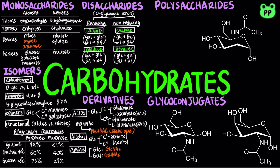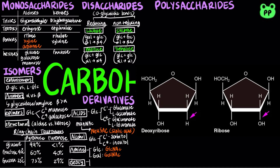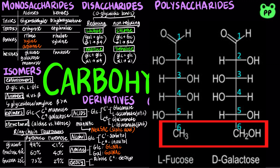In deoxysugars, one of the hydroxyl groups is substituted for hydrogen, such as carbon-2 of ribose in deoxyribose, a key component of DNA. The deoxysugar of galactose at carbon-6 is known as L-fucose, which is a key component of glycolipids and glycoproteins, as well as the structural component of the antigen of A and B blood groups.